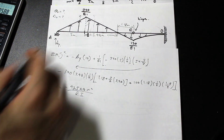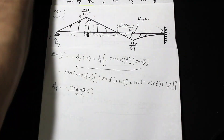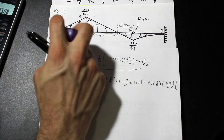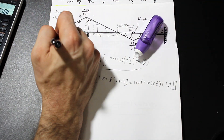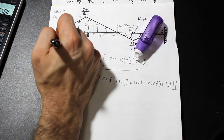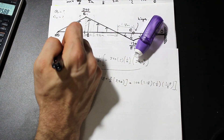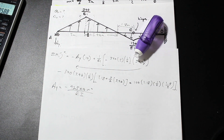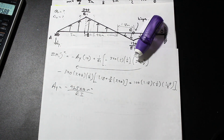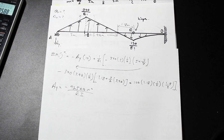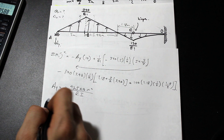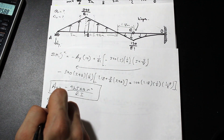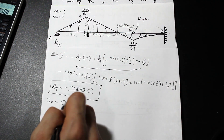Since we got a negative value, Ay acts downward — opposite to our assumed direction. With that settled, let's go ahead and solve for the slope at D, which equals the shear at D in the conjugate beam.